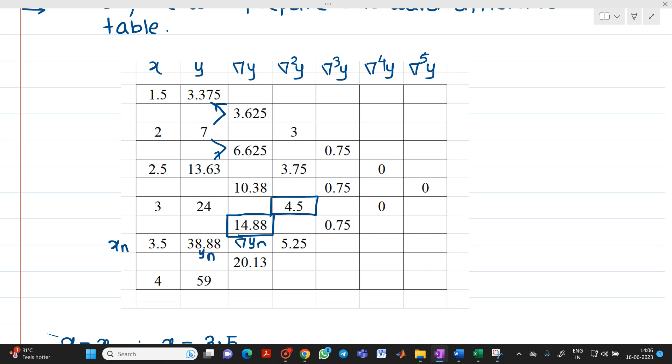After that, this value is del square yn. Then this 0.75 will be del cube yn, and then this will be del raise to 4 yn. So no need to take del raise to 4 yn because it is 0.